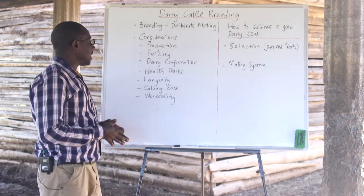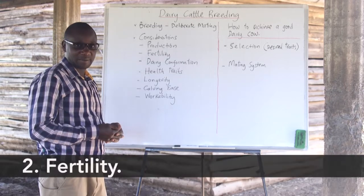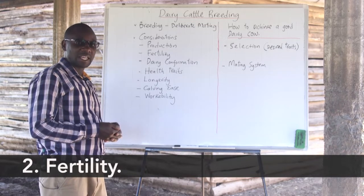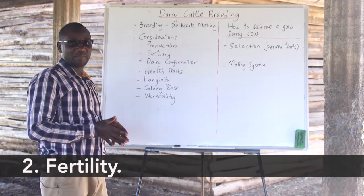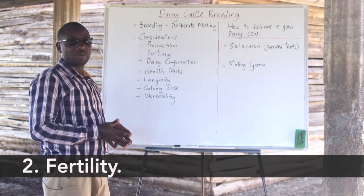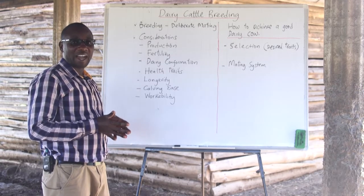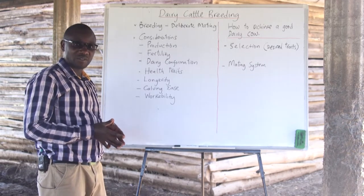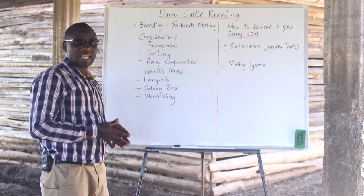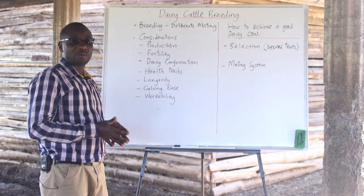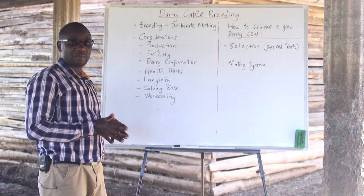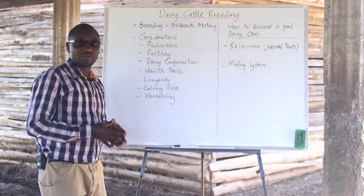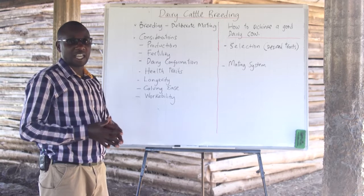The other consideration is fertility. Fertility in dairy cows is defined as the ability of that particular cow to give the farmer a calf every year. That means the cow is able to conceive when inseminated and is able to hold the calf throughout the gestation period until it gives birth.